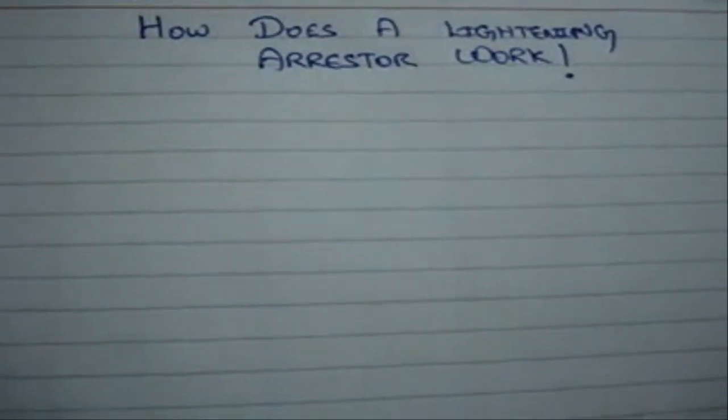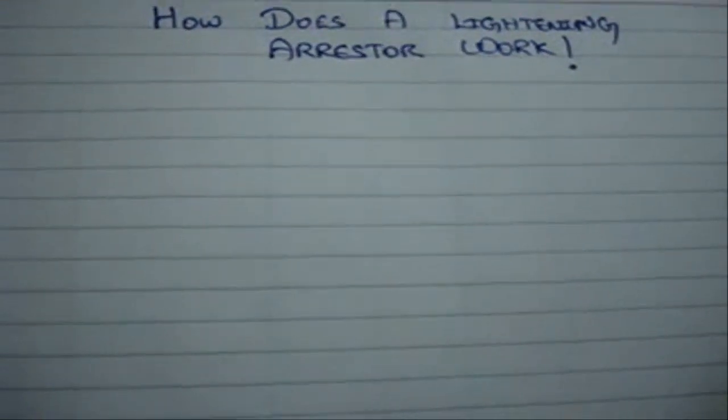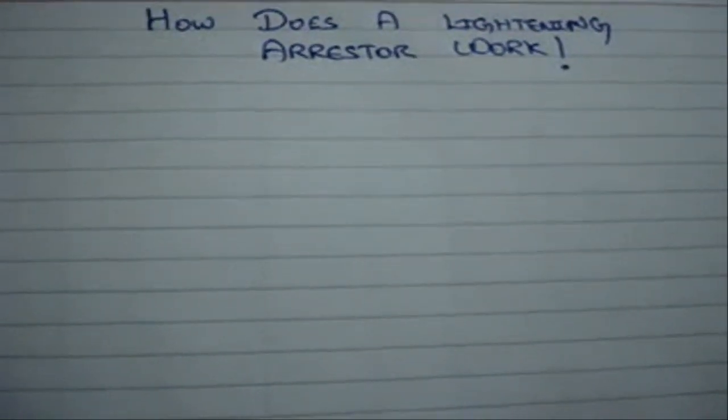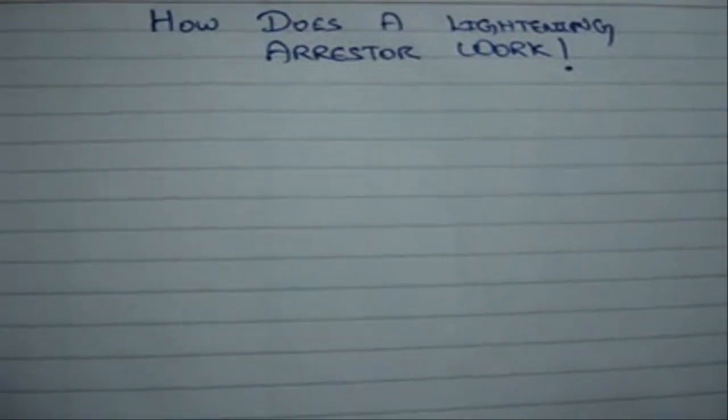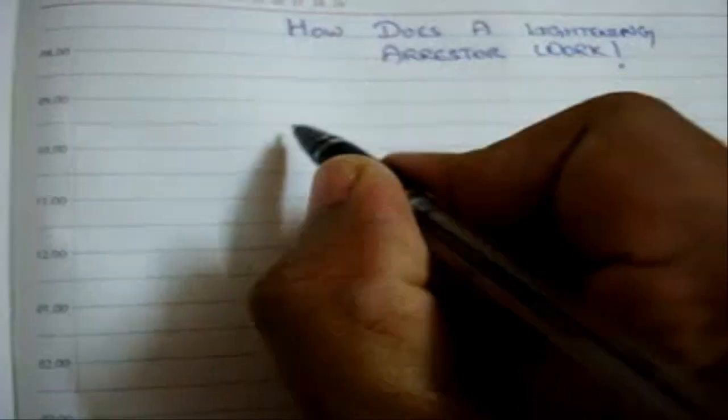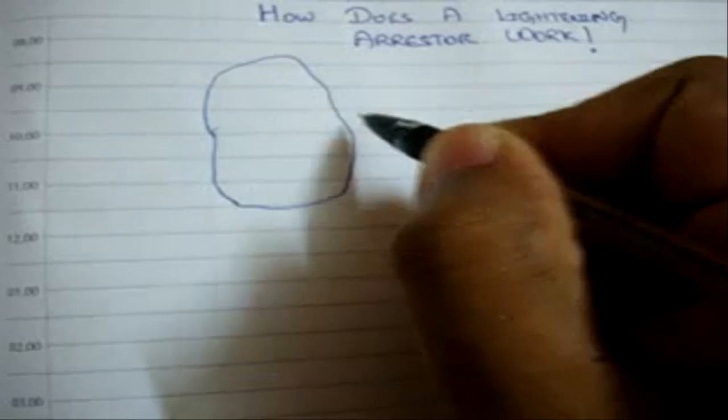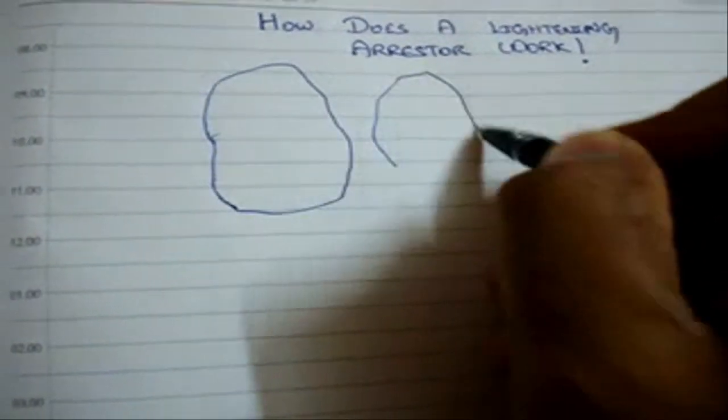Good day everybody, let's now discuss how does a lightning arrestor work. I'm sure that everybody must have seen lightning. A lightning basically happens when two clouds, rain-carrying clouds, interact. For example, this is a rain-carrying cloud and this is the other one.